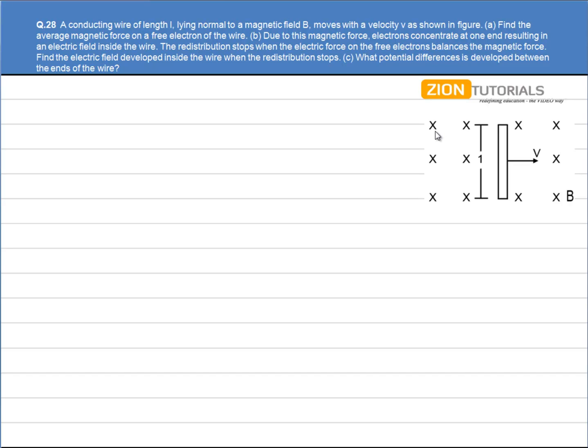A conducting wire of length L lying normal to a magnetic field moves with a velocity V as shown in figure. Find the average magnetic force on a free electron of the wire.